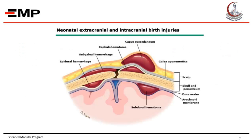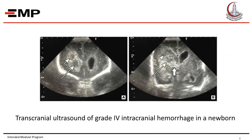Another type of hemorrhage is subgaleal hemorrhage, due to rupture of the emissary veins during vacuum-assisted delivery. This bleeding occurs above the periosteum and crosses the suture line. Other types include epidural hemorrhage above the dura and subdural hematoma below the dura. This picture shows transcranial ultrasound of grade 4 intracranial hemorrhage in a newborn, with the long arrow showing the bleeding.